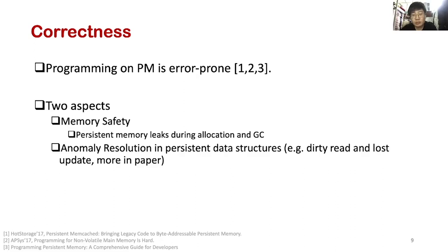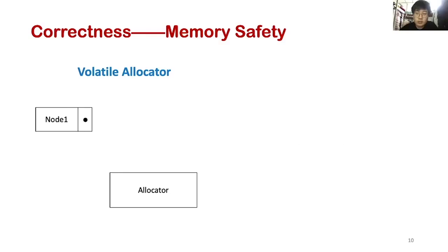Memory safety is mainly about persistent memory leaks during allocation and GC. Anomaly resolution includes dirty read and lost update. We will discuss memory safety here; anomaly resolution can be found in the paper. When allocating persistent memory, traditional malloc-free interfaces are not an appropriate choice. A volatile allocator is commonly used in DRAM, and it has no guarantee for failure atomicity.